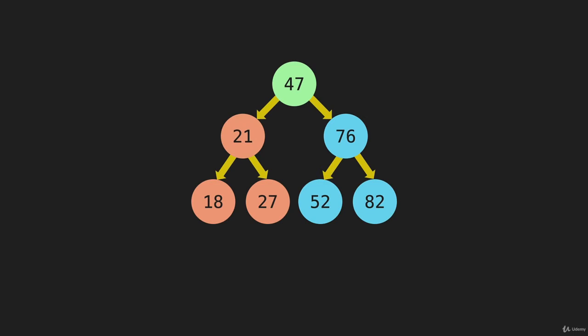Now we come back up to the 47. It's gone left but hasn't gone right yet. So we're going to go to the 76, and we always go left first, going down to the 52. It's going to try to go left and right — it doesn't have any items there — so it will write its value to the array. We come back up to the 76, then come down to the 82. It will try to go left and right and write its value. Now when we come back up to the 76, it has already gone left and right, so it can write its value.